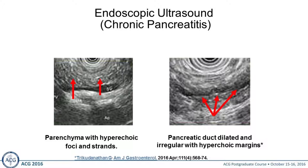An EUS showing parenchymal changes with hyperechoic foci and strands, and a very irregular and dilated duct, are features that can be seen. But you have to be very careful — as you get older some of these changes are present, and if you smoke or drink alcohol you could also have them. It's very important to interpret imaging studies in the right setting: do you have the right patient, the right clinical history, the right etiologic factors? You can see many of these changes if you do an EUS in someone with esophageal cancer who smokes and drinks.